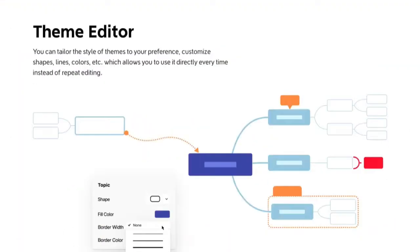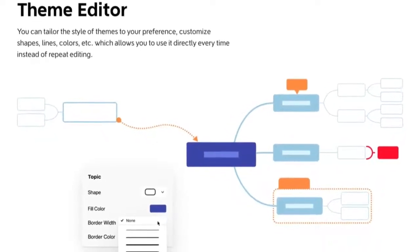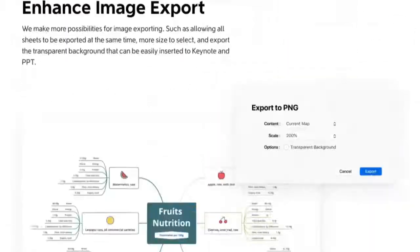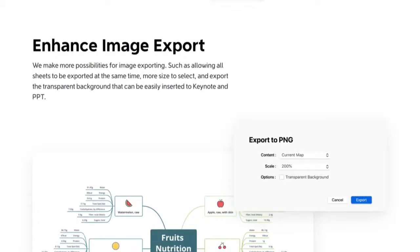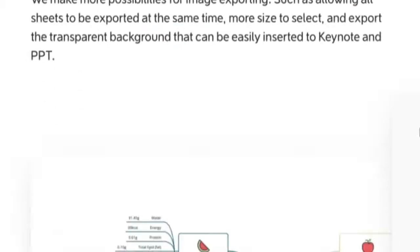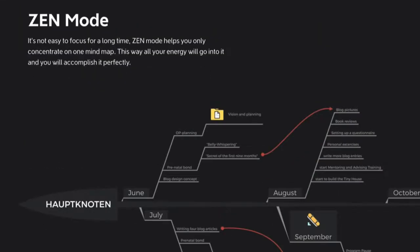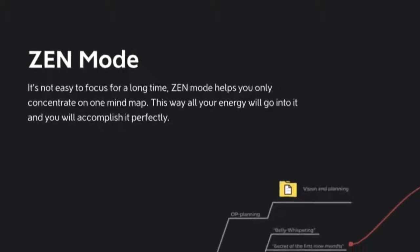Next comes the theme editor — here's where the eye candy kicks in. You can style theme elements such as lines and shapes to create very nice mind maps. Image exports have also gotten a makeover, with the ability to scale and export with transparent backgrounds that you can insert into Keynote or PowerPoint presentations, and even export multiple sheets at once. Zen Mode helps you concentrate on just one mind map at a time.